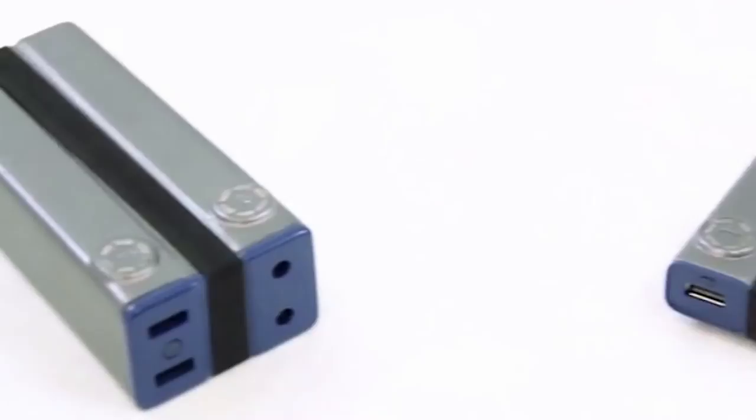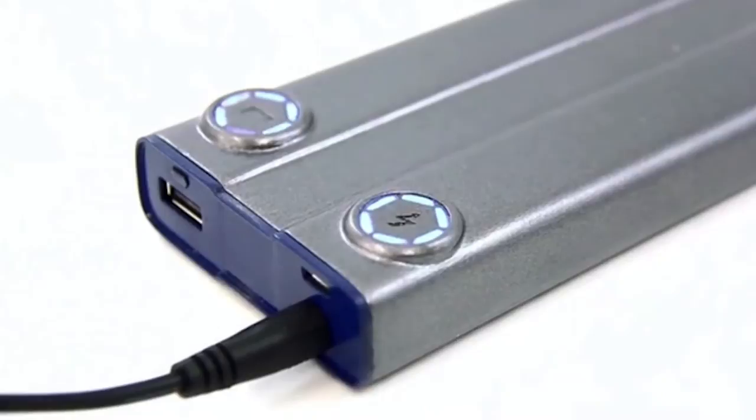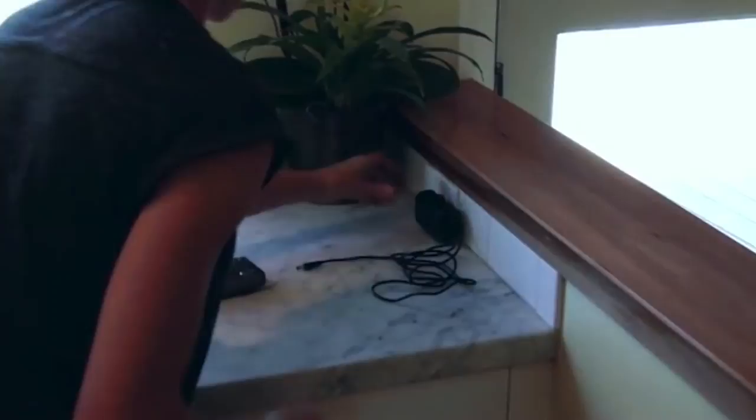the Pronto 12 portable charger can juice most phones up to nine times. But the really neat feature is how fast it will charge up itself. Power Practical says plugging in the Pronto 12 for just five minutes will sponge up enough electrons to completely regas an iPhone. That's pretty fast.